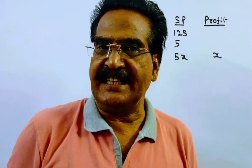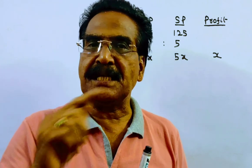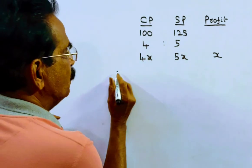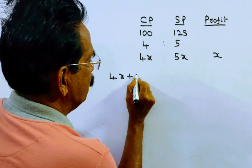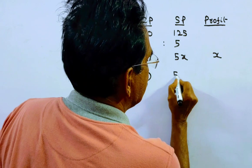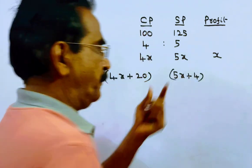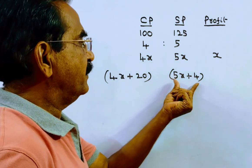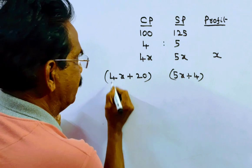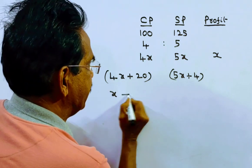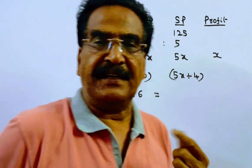Now it is given that if cost price and sold price are increased by 20 rupees and 4 rupees respectively. So the new cost price is 4x plus 20, and the new sold price is 5x plus 4. The new profit is (5x + 4) minus (4x + 20), which equals x + 4 minus 20, giving a new profit of x minus 16.